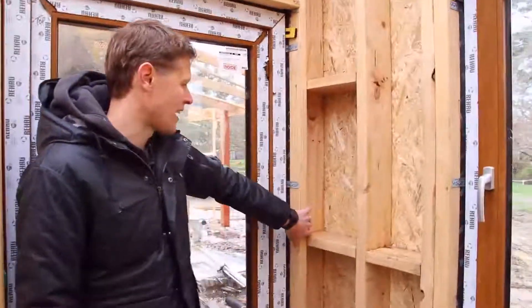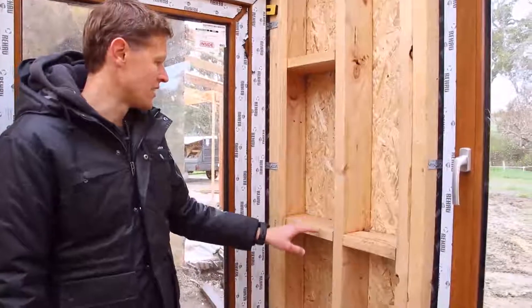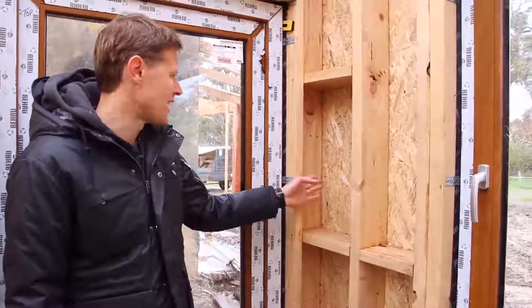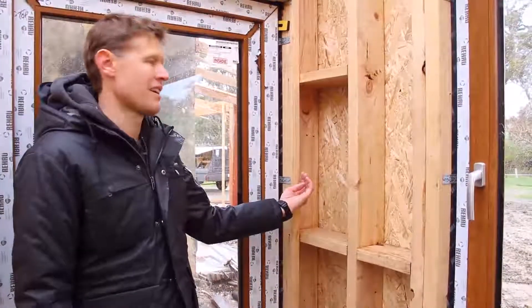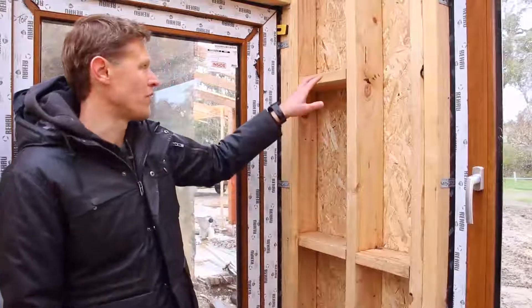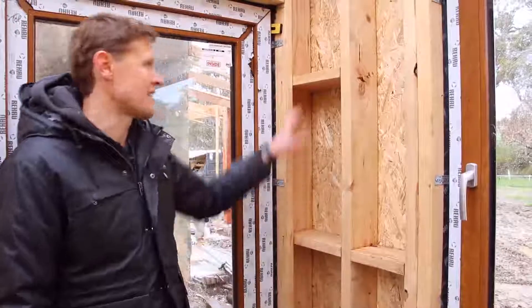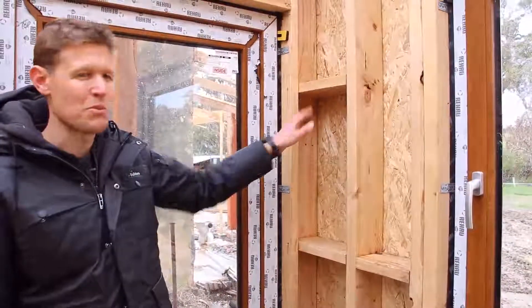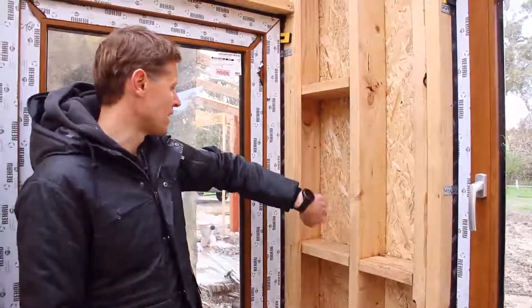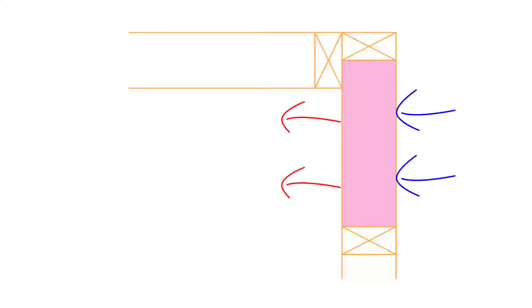Here what we've done is what's called a California corner. So instead of having an extra stud for the plasterboard to connect to, we've got a series of noggins in place spaced at 600 millimetres, which picks up the plasterboard. Most importantly, it allows us to tuck the insulation all the way in behind the corner, preventing cold air from coming through into the building.